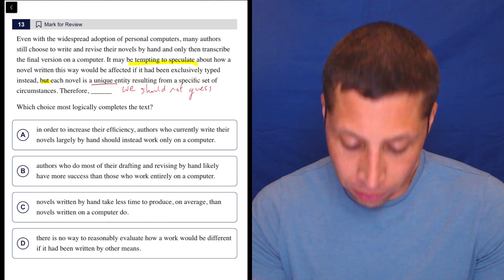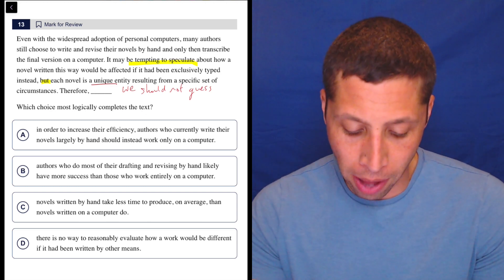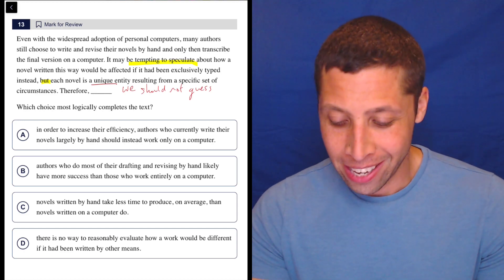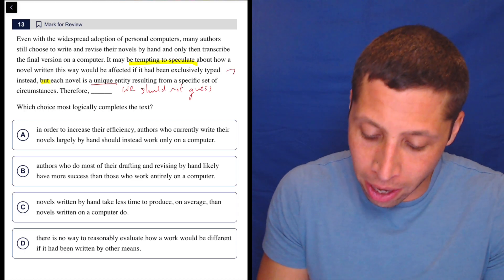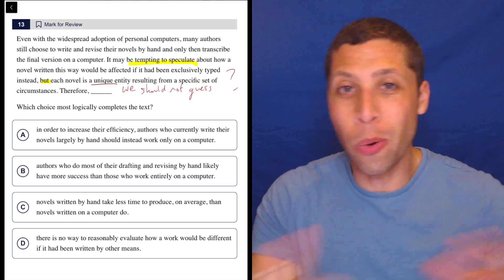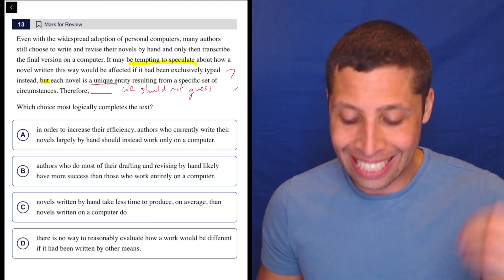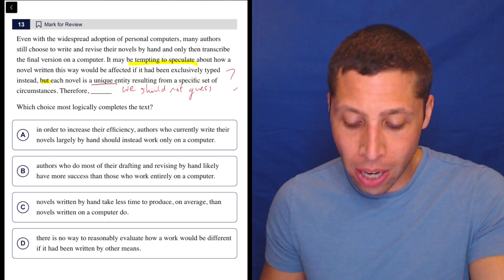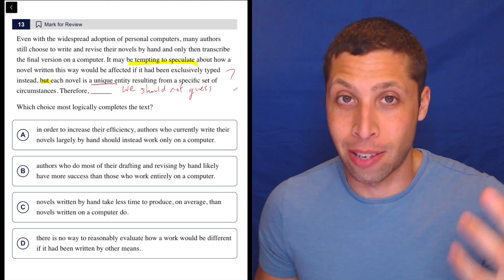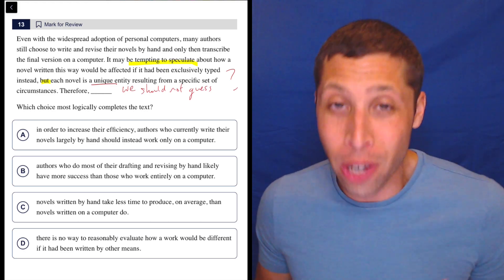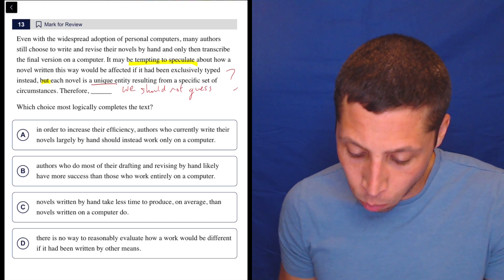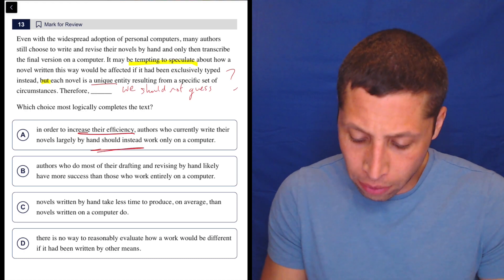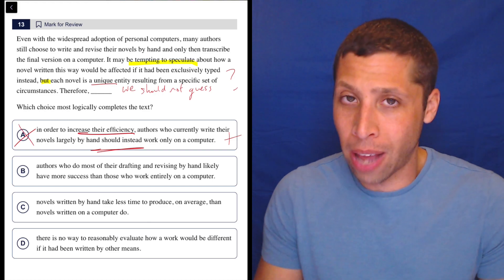So therefore, in order to increase their efficiency, authors who currently write their novels largely by hand should instead work only on a computer. Well, no. The point is that we don't know what's going on. We don't know what would have happened if the author had made a different choice. It's tempting to speculate how it would be affected, but each novel is unique and results from its own circumstances. So the point of the passage is we don't know. So to say that one thing should be done or is more efficient - this is definitely a positive connotation when we don't have that from the passage.